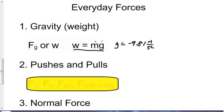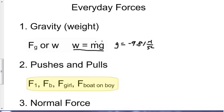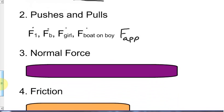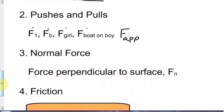Pushes and pulls can be labeled many different ways. Some people call these applied forces — F-app for applied force — but we could just as easily call them F1, F2, FA, FB. We could say it's the force from the girl, or if it's a boat pushing on somebody, we could call it the force of the boat on the boy. These are all pushes and pulls of things.